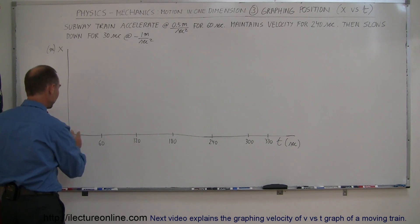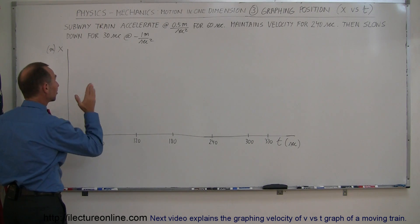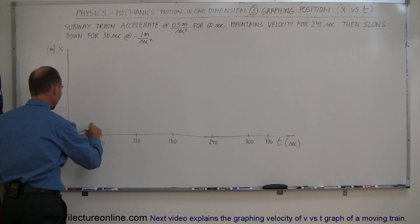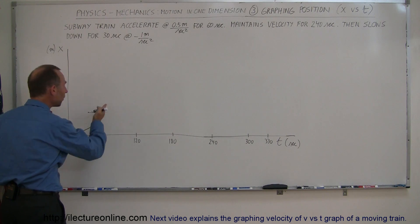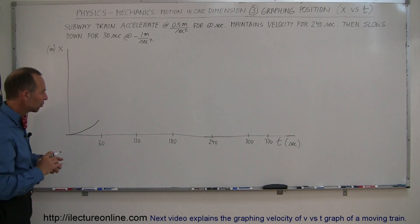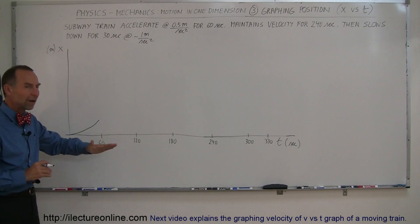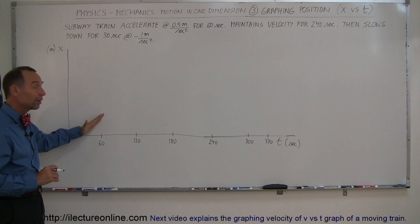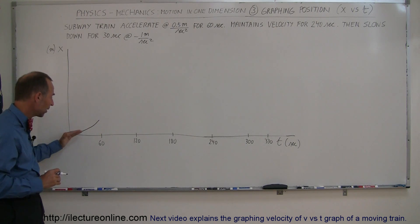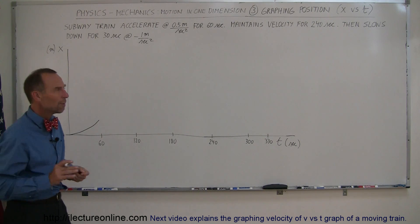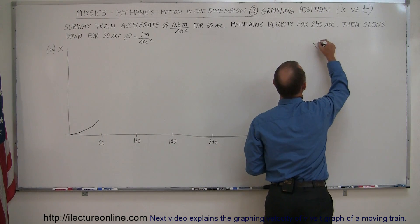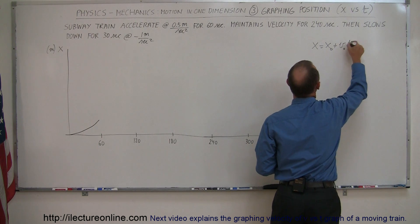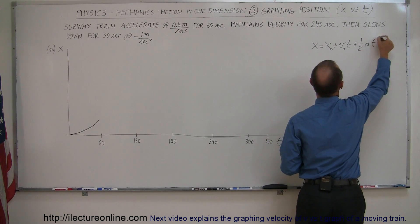For the first 60 seconds the train is accelerating, so the position will look parabolic. Notice that the slope of that line is increasing — because the slope of an x versus time graph represents velocity, and as the train speeds up, the velocity gets greater and greater, so the slope gets greater and greater. You get this parabolic curve. The equation for position is x equals x-naught plus v-naught times time plus one-half a t squared.